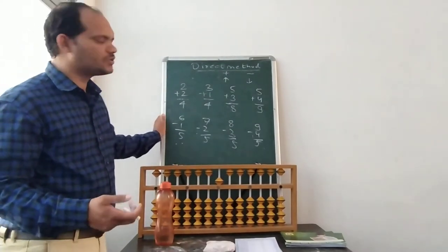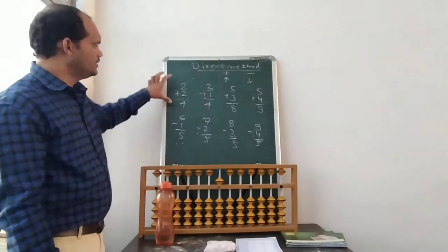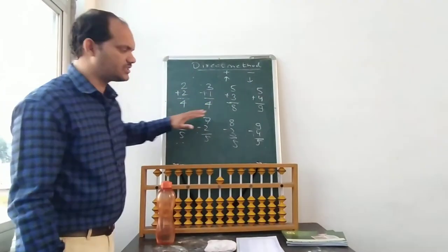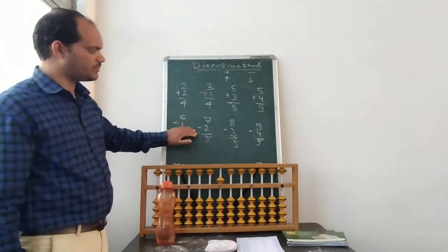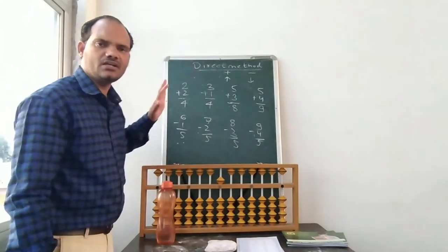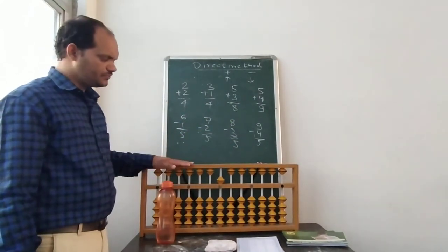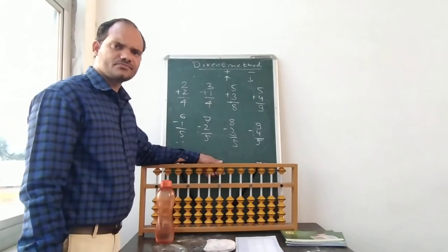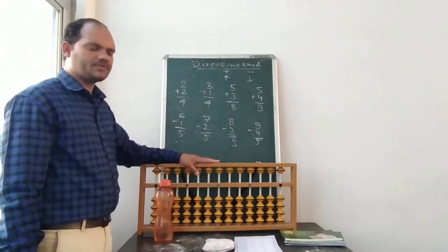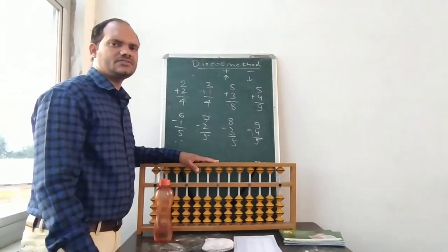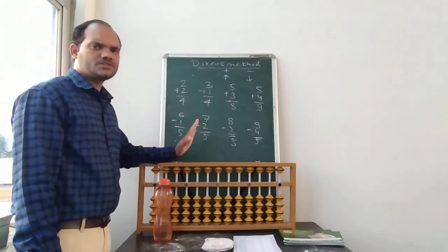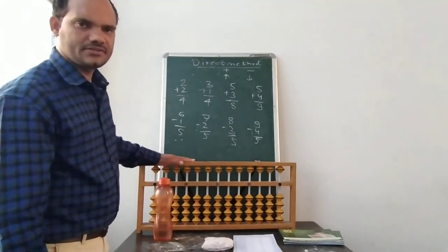I can give you more classes on these direct methods. 2 plus 2, 3 plus 1, 5 plus 3, 5 plus 4, these are the plus. And 6 minus 1, 7 minus 2, 8 minus 3, 9 minus 4 are minus. So friends, today we explained about the direct method. In a further class we will learn about the small methods. OK, goodbye.